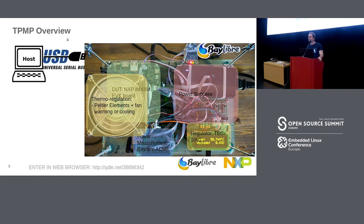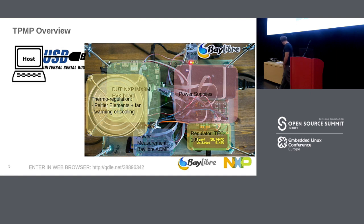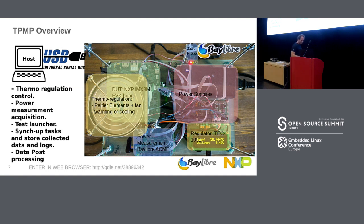Then we have the power supply section. These power supplies are actually controlling the supply of the test bench, not the device under test — as we saw before, it's supplied through this link. All of these are controlled from a host PC communicating to the different elements through USB links. This PC handles all the thermal regulation — connecting to the regulator and also to the device under test, which has a temperature sensor in it. It controls all the power measurement using the battery pack, and also handles all the tests and the synchronization between all elements.